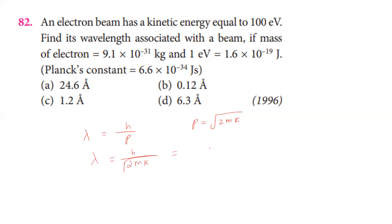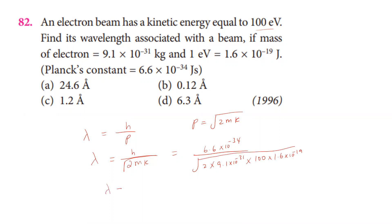Substituting: h is 6.6 times 10 to the power minus 34, divided by the square root of 2 times 9.1 times 10 to the power minus 31 times 100 times 1.6 times 10 to the power minus 19 joules. This gives 1.2 times 10 to the power minus 10 meters, which is 1.2 angstroms.